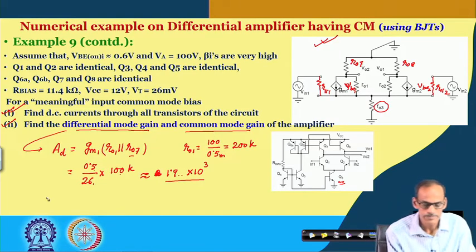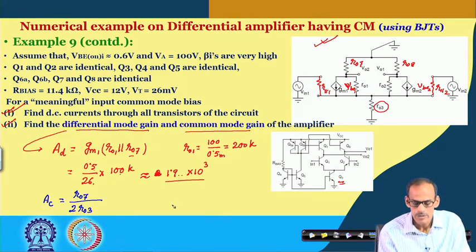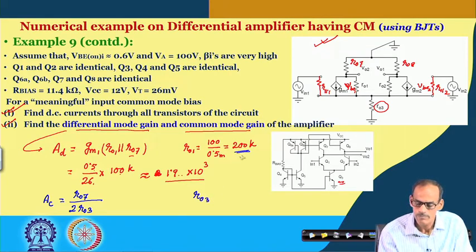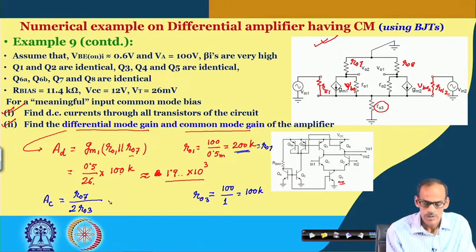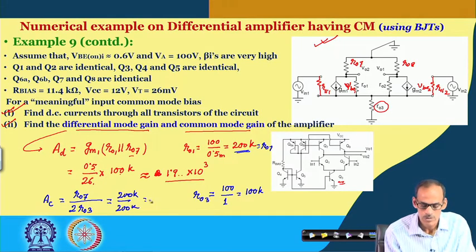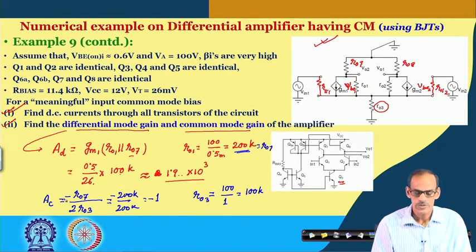On the other hand, the common mode gain expression is ro7 / (2 × ro3). ro7 = 200 kΩ, and ro3 = VA / IC3 = 100V / 1mA = 100 kΩ. So the common mode gain = 200k / (2 × 100k) = 1, with a minus sign. That is how we get the common mode gain and differential mode gain of this circuit.